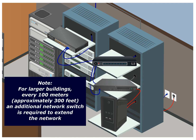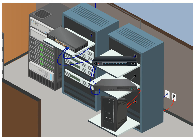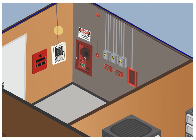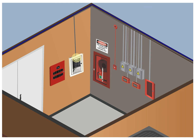This router will then connect to the main floor network switch via an additional Ethernet cable. Note: for larger buildings over approximately 300 feet, an additional network switch is required to extend the network. Connect the WAN port of the VOIP interface card inside the distribution module to the building router via an Ethernet cable. Plug the power connection of the distribution module into the RP-7700104. Run a single twisted shielded pair from the distribution module to the command center. If there are multiple lobby stations, run an additional pair to each lobby unit from the distribution module.